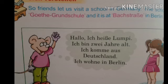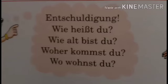The next sentence: 'Ich komme aus Deutschland.' 'Komme' is a verb meaning to come, so 'I come from Germany.' The last sentence: 'Ich wohne in Berlin' — I live in Berlin.